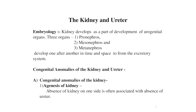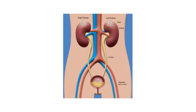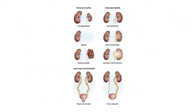Absence of the kidney on one side is often associated with absence of the ureter — that is called agenesis of the kidney. The various types of congenital anomalies of the kidney include agenesis, hypoplasia and dysplasia, supernumeric kidney, duplex kidney and ureter, fetal lobulation, defect in position and ectopic kidney, fused kidney, cystic disorders, congenital hydronephrosis, and aberrant renal vessels.